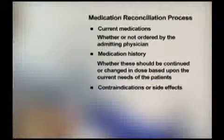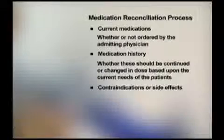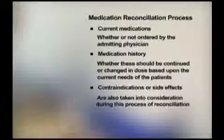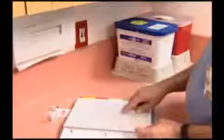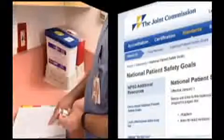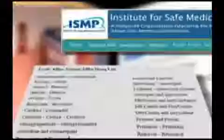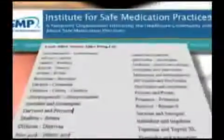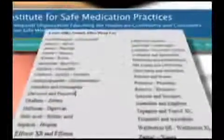Contraindications, or serious side effects with the new medications being prescribed, are also taken into consideration during this process of reconciliation. One important cause of medication errors is confusion between two drugs with similar names. Current Joint Commission Patient Safety Goals require facilities to develop a list of look-alike, sound-alike drugs to help prevent such errors. The Institute for Safe Medical Practices, ISMP, maintains an online listing of confusing drug names, which includes those previously specified by the Joint Commission.